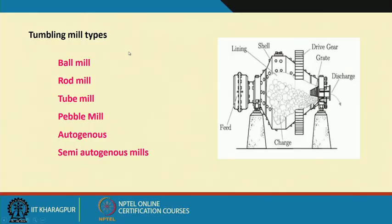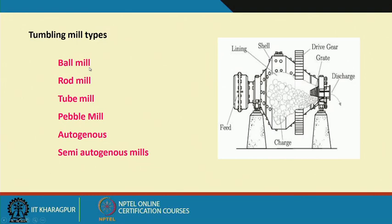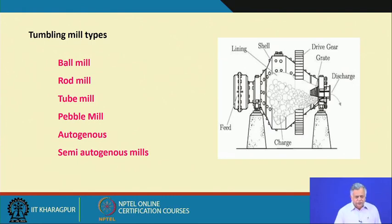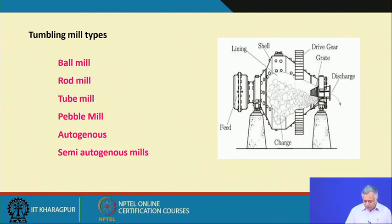Tumbling mill types differ depending on the dimensions and geometry of the mill and the type of media used. We have ball mills, rod mills, tube mills, pebble mills, autogenous grinding mills, and semi-autogenous grinding mills. I will discuss the important mill types used in the industry — not all of them are very popular, so I will skip some and discuss in detail the ones that are frequently used.